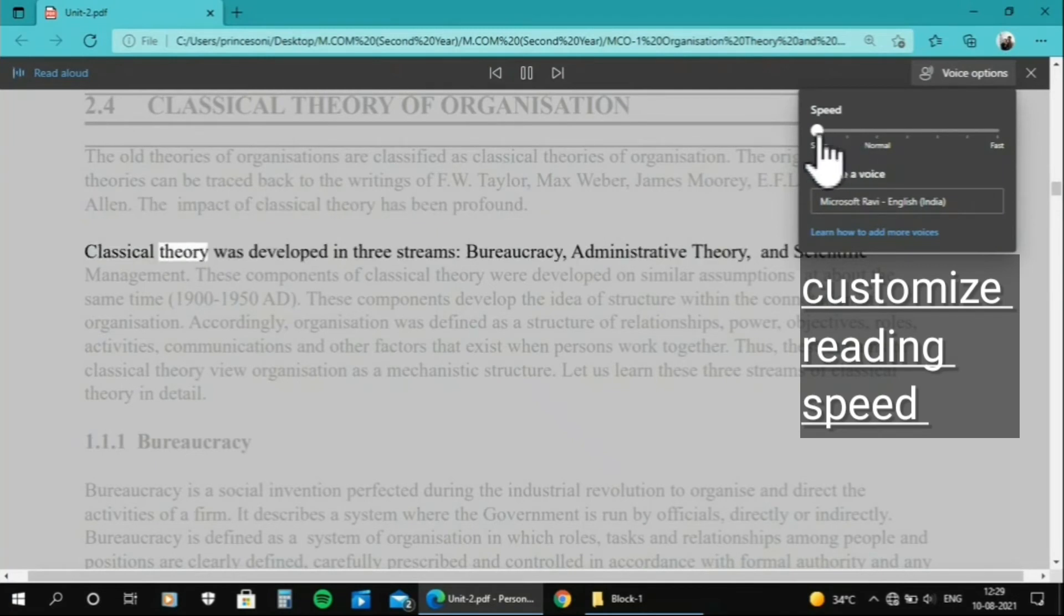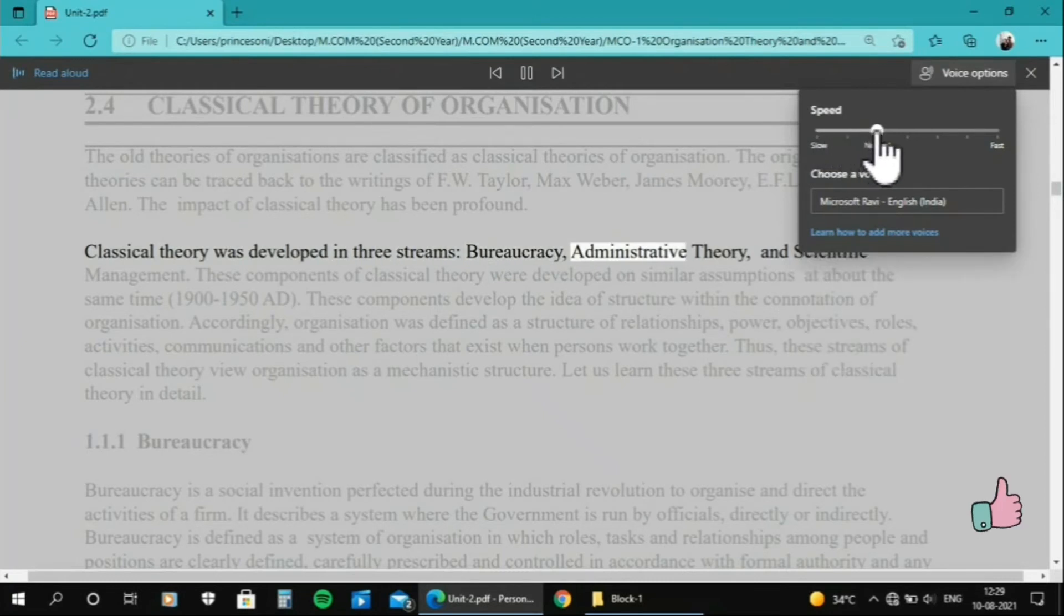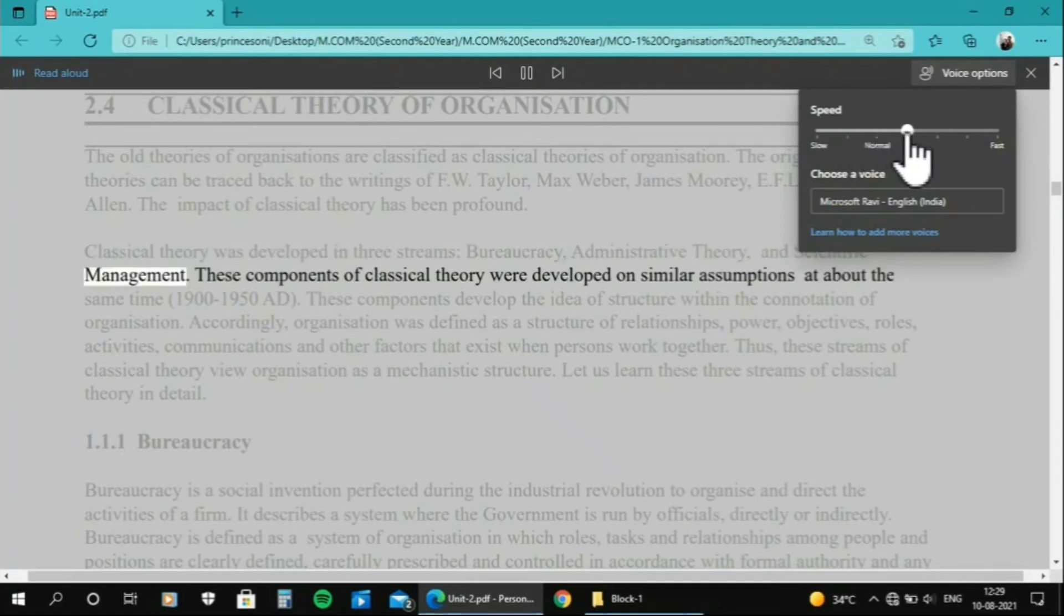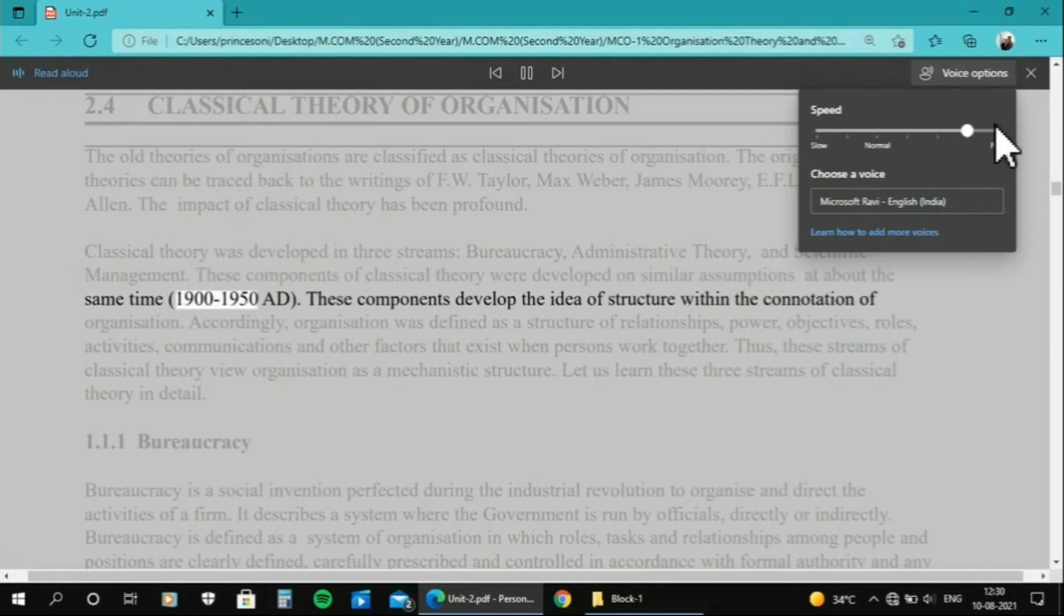Classical theory was developed in three streams: bureaucracy, administrative theory, and scientific management. These components of classical theory were developed on similar assumptions at about the same time, 1900 to 1950 AD.